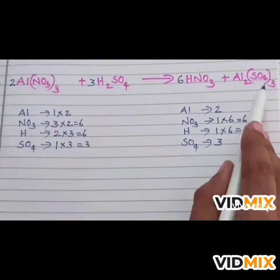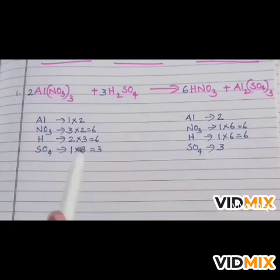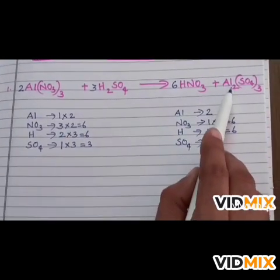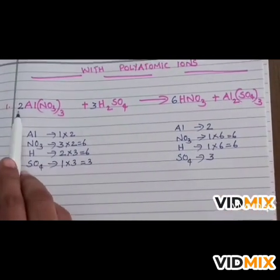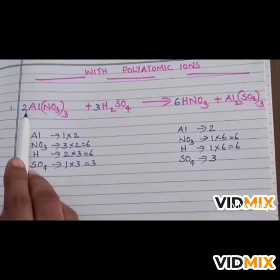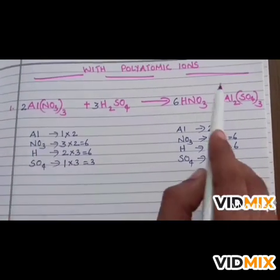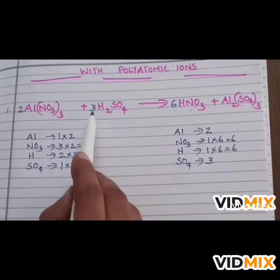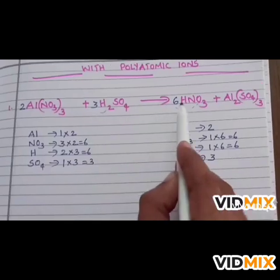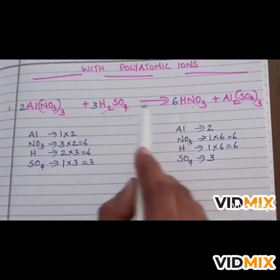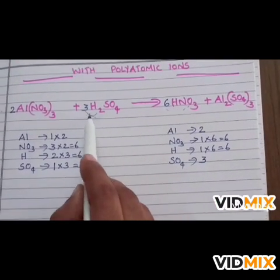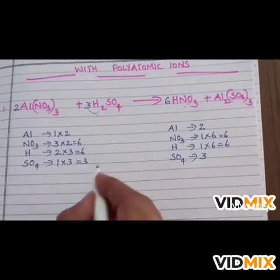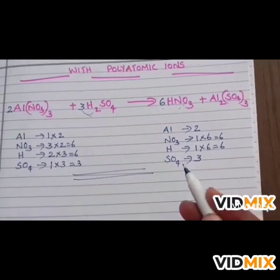So let's cross check the equation. 2 Al on both sides, 6 NO3 on both sides, 6 hydrogen in LHS as well as RHS and 3 sulfate ions on both sides. Now the equation is balanced.